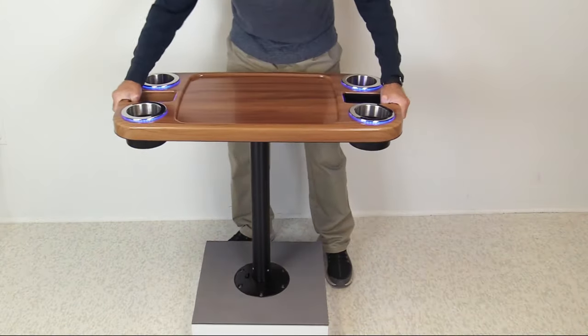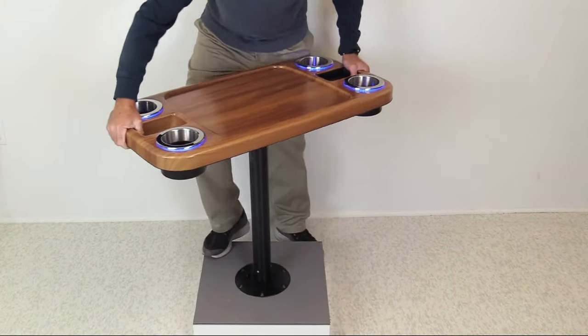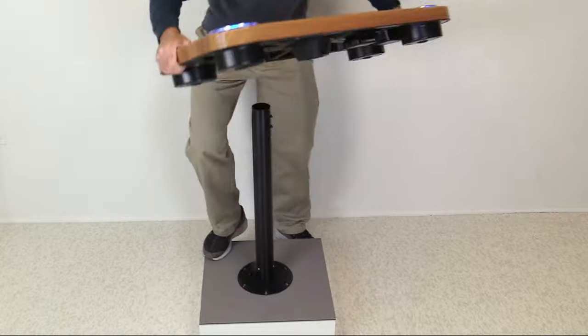Place the tabletop back on the leg, push in the release tab on the floor base, and twist the tabletop counterclockwise to loosen the leg.